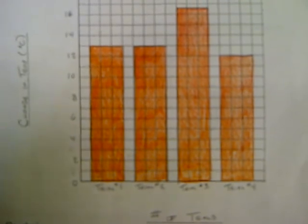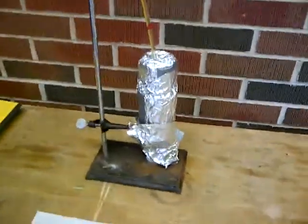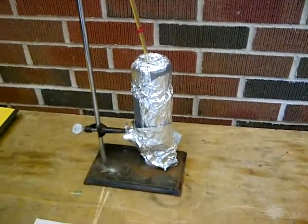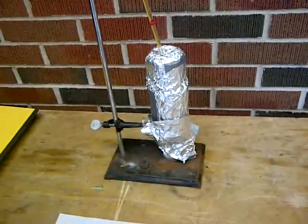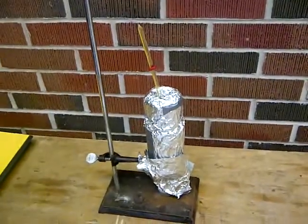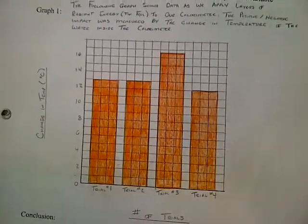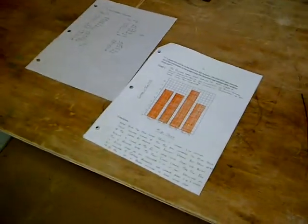Originally, we were only going to do three trials. But when we found that trial one and trial two came out to the same data, we added a fourth trial to have more data. The purpose of the extra trial was that with trial one and two showing the same increase in temperature, yet our third trial showing a spike as seen on the graph, four data points gave us enough to make a stronger conclusion and a more proper answer.